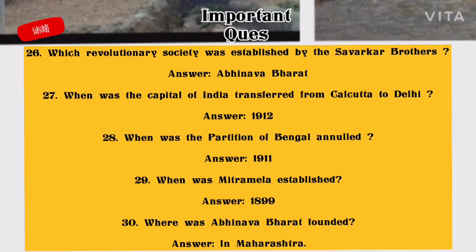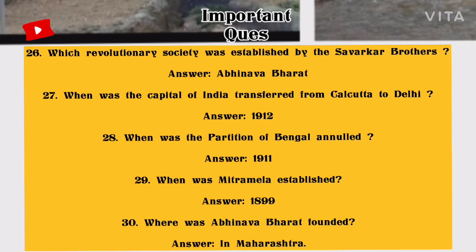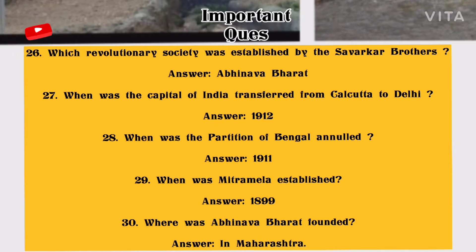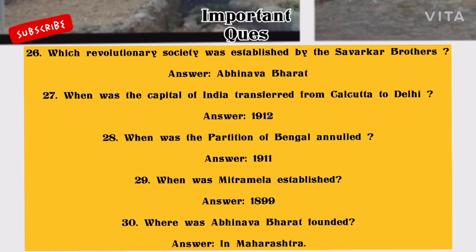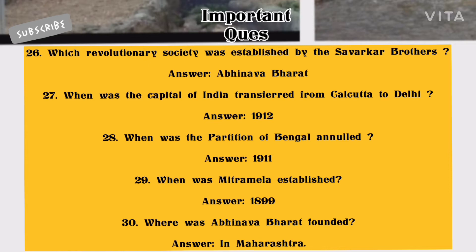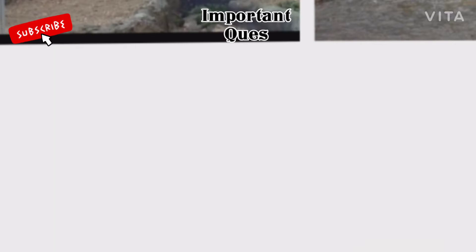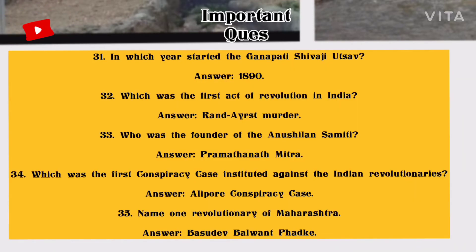Number 26: Which revolutionary society was established by the Savarkar brothers? Answer: Abhinav Bharat. Number 27: When was the capital transferred from Kolkata to Delhi? Answer: 1912. Number 28: When was the Partition of Bengal annulled? Answer: 1911. Number 29: When was Mitra Mela established? Answer: 1899.